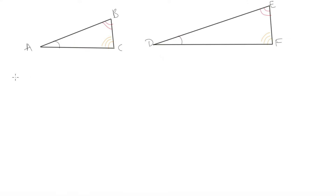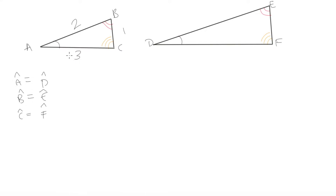The first thing we had was that angle A equals angle D, angle B equals angle E, and angle C equals angle F. Now let's say side AB has length 2, side BC has length 1, and side AC has length 3. In triangle DEF, the length of DE is 4, DF is 6, and EF is 2.